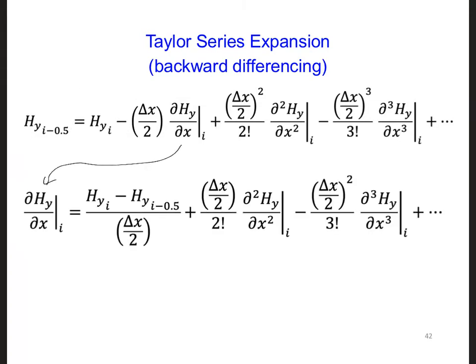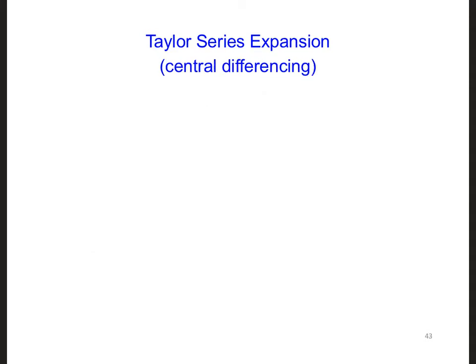In other words, here is our error term when we approximate our partial derivatives with our backwards differencing expression, and this is also first order accurate. So backward differencing is also first order accurate.